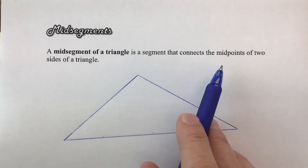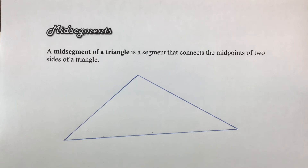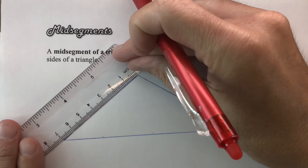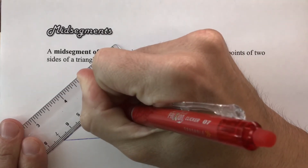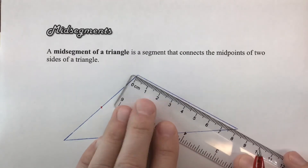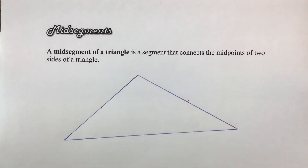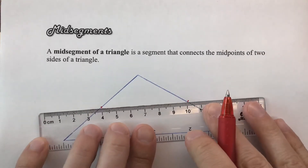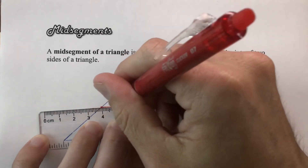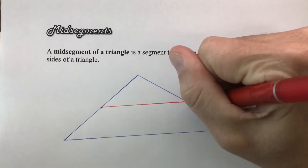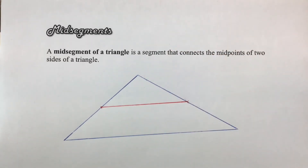By definition, a midsegment of a triangle is a segment that connects the midpoints of two sides. I'm going to look at the two sides I set at seven and eight and find their midpoints. Since one side was seven, the midpoint is at 3.5. The other side was eight, so the midpoint is at four. I'll connect those two midpoints — and by definition, that is a midsegment.